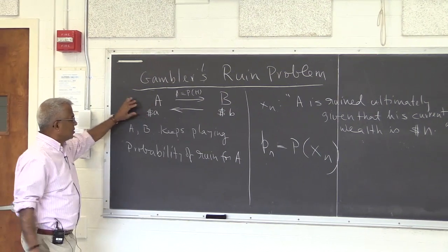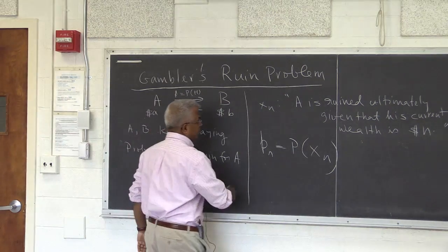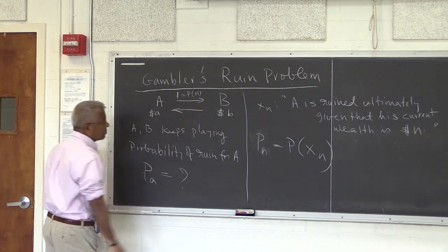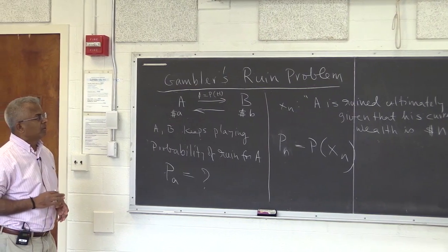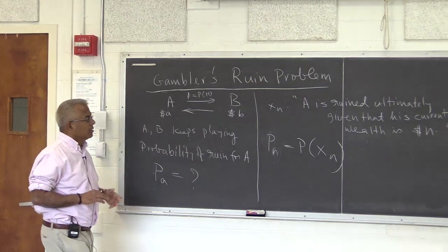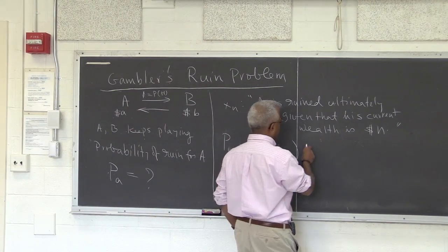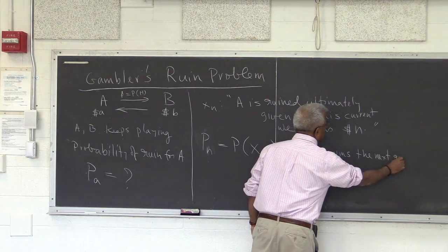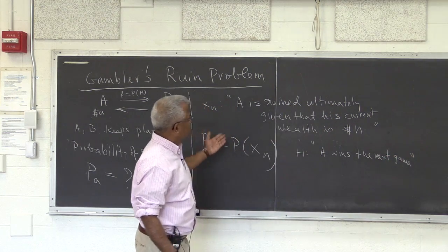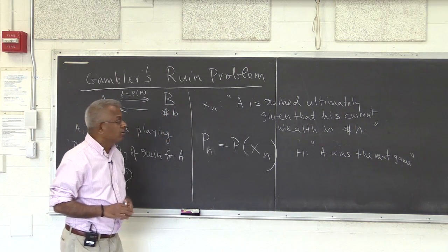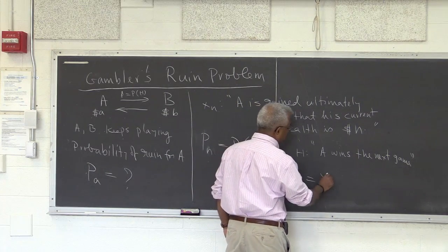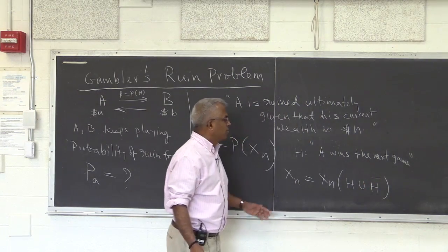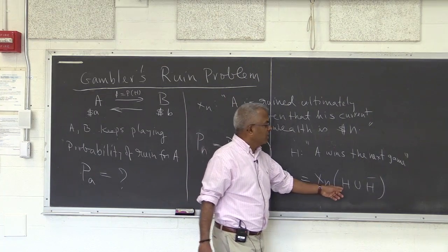So what is the probability that A will be ultimately ruined, given that his current wealth is a? To make further progress, let me also define an event H: A wins the next game. When they play the next game, there are only two possibilities — either A wins or A loses. So Xn can be written as Xn intersected with H union H-bar, because H and H-bar form a partition.